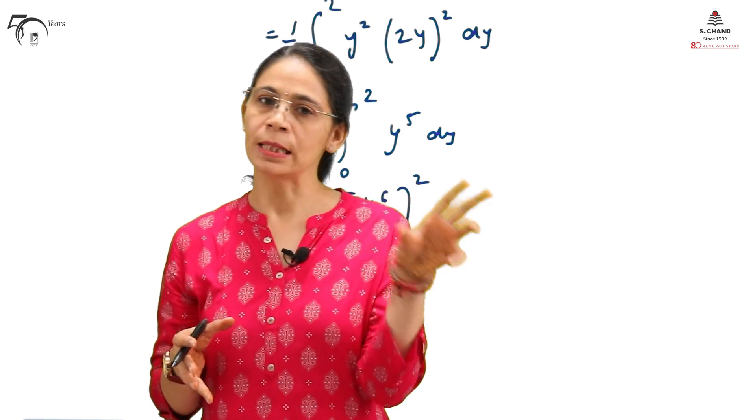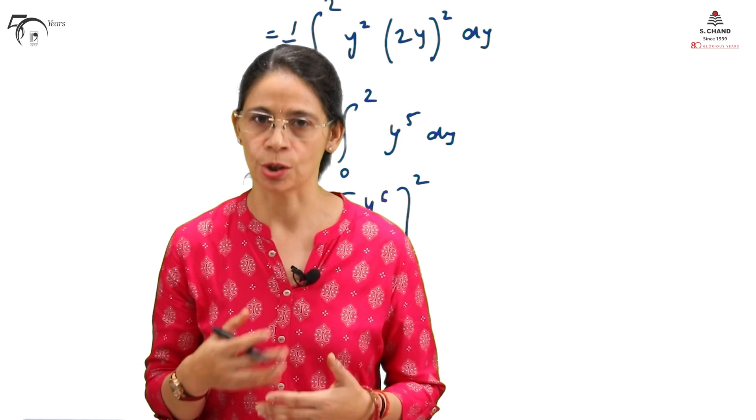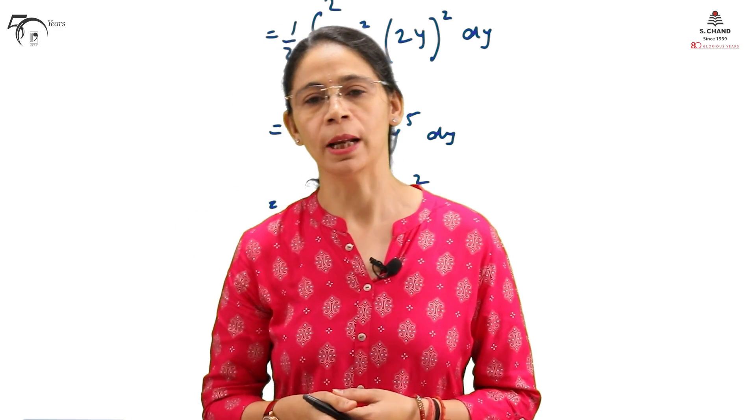We had the same function xy², but as soon as we changed the region of integration, the entire result changed. That is why region of integration plays a vital role in the final answer. The most important thing to remember is: if limits are given as a function of x, they are the limits for y; if limits are given in terms of y, they are the limits for x. With respect to the variable whose limits are given as a function of another variable, we must integrate first.